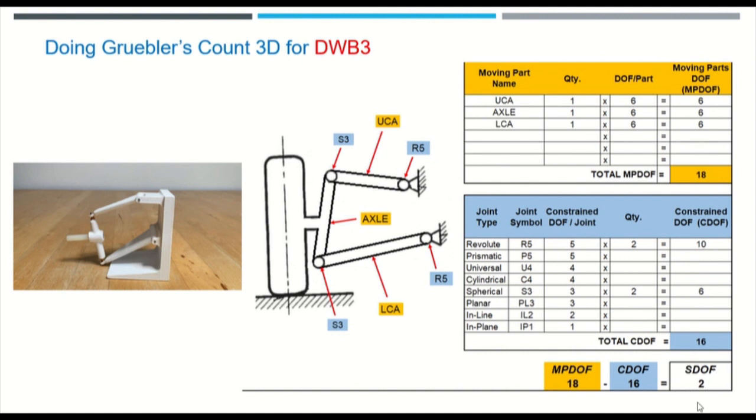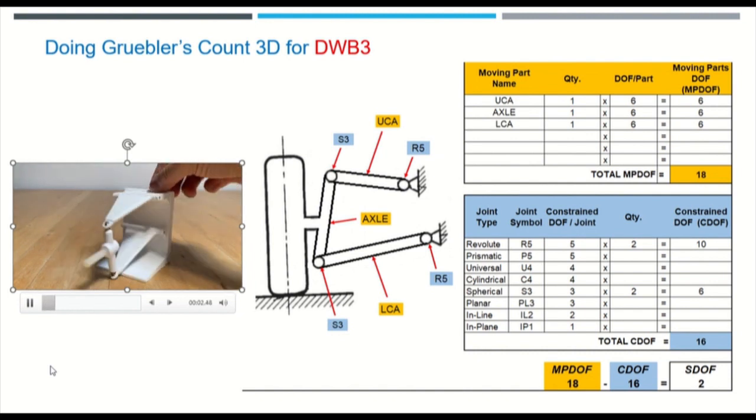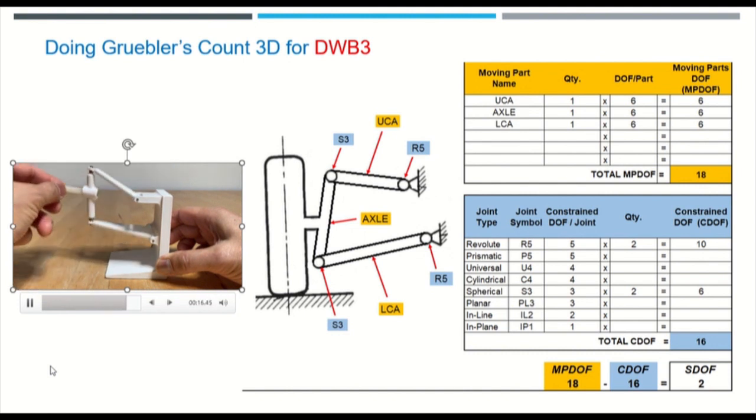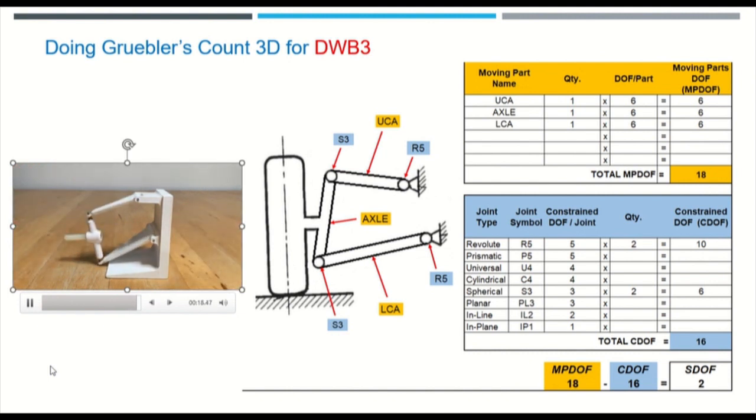So as you do the Gruebler's again, we have 18 subtract 16 equals positive two. Now the mechanism is able to have two system degrees of freedom instead of one. But now we have the axle and wheel assembly being able to rotate and be steerable about the two S3 joints and then also suspend up and down.